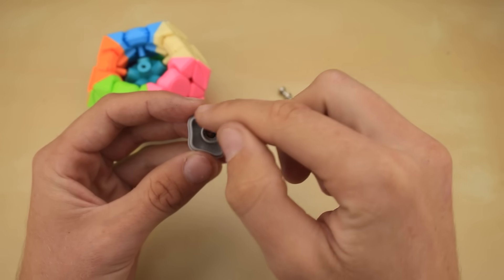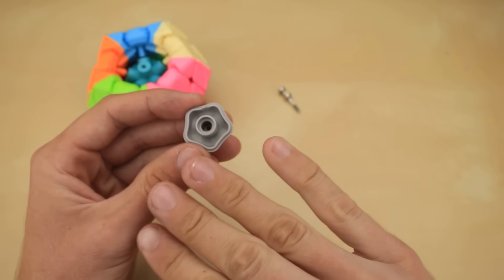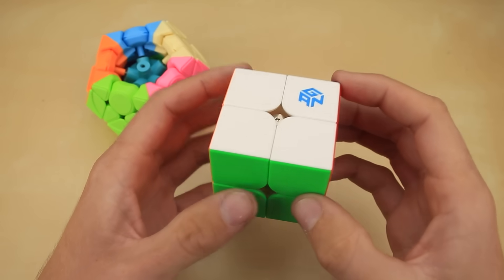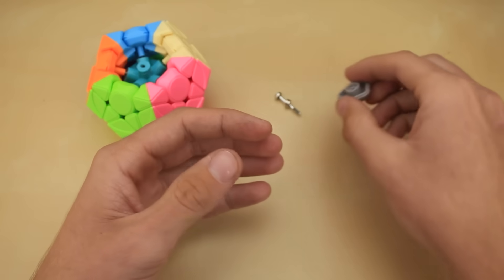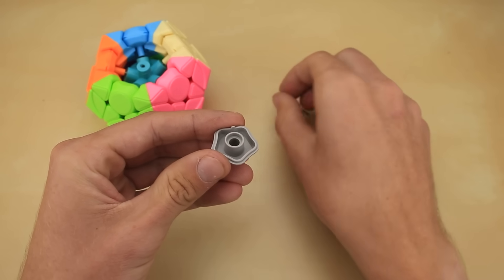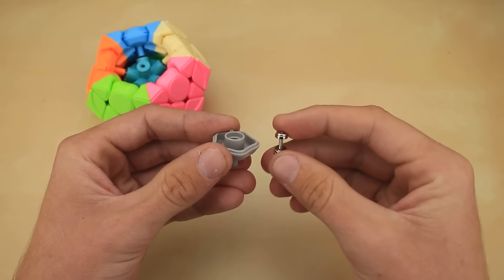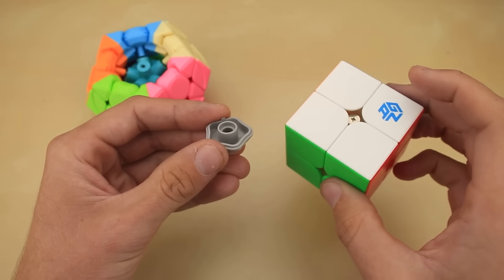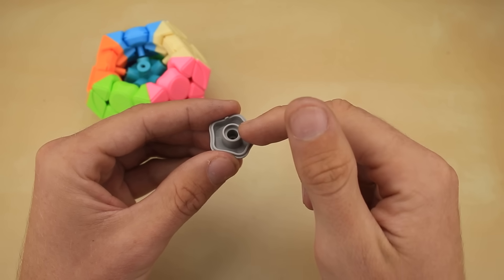So instead, I'm just going to remove the entire tube altogether so that we basically just have a flat surface with a hole in it. Now, if you've seen my Maglev 2x2 video, that may sound like a horrible idea. Why? Well, because this tube is basically what keeps the screw upright. It keeps it from tilting back and forth in either direction, making the cube super unstable, like what happened on the 2x2. So why am I okay with removing it on the Mega Minx?